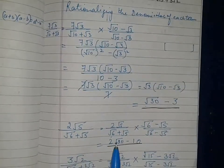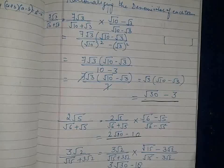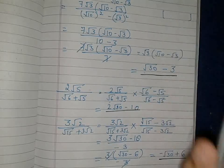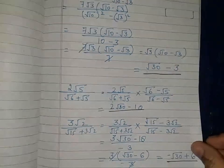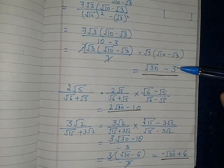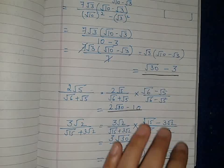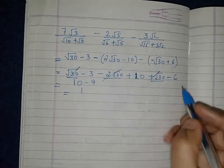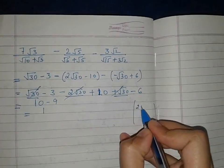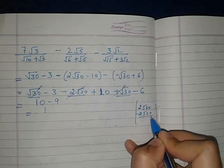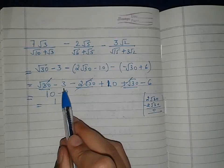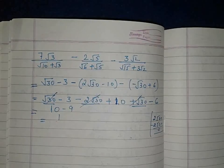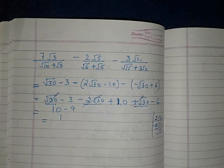To summarize what we have done: first we rationalized each term separately — show all steps with the formula mentioned, do not write the answer directly. Then we substituted the rationalized values and evaluated the expression. The √30 terms all cancelled each other, and the constants gave 10 − 9 = 1. I'll discuss more questions in the next video. Till then, try to understand the concept.